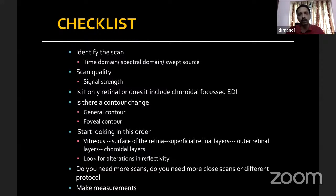Is the foveal contour affected? Then you start looking in a particular order — from the vitreous, the surface of the retina, the superficial retinal layers, then the outer retinal layers, and then the choroidal layers. In each of these layers, look for alterations in reflectivity. Comment on whether the lesion is hyperreflective or hyporeflective. Finally, decide whether this scan is enough or whether you need more scans to study a particular disease, as some diseases require multiple scans.